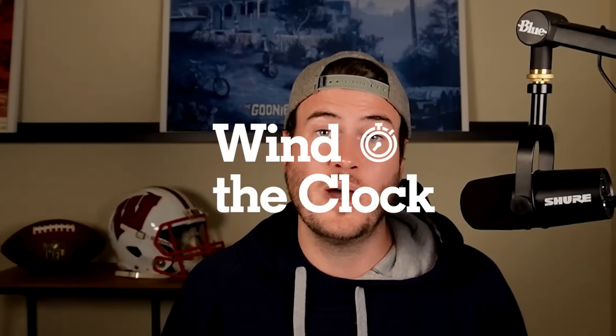Hey guys, Nate Tice here from The Athletic Football Show, back again with another edition of Wind the Clock. This week, we're going to look at how the Detroit Lions hit a 335-pound man in plain sight to get a key first down in a four-minute situation and ultimately a field goal to help ice the game against the Vikings. So let's see how the Lions use their earlier jumbo personnel tendencies to get this first down and let Penei Sewell fly.